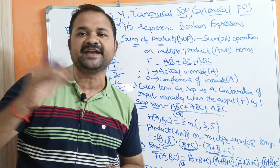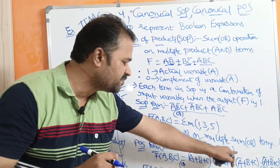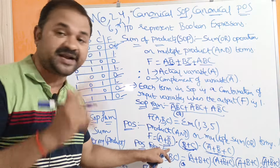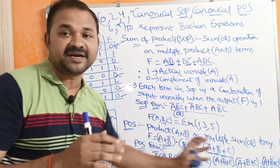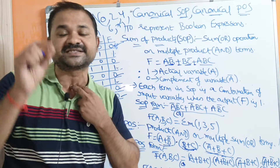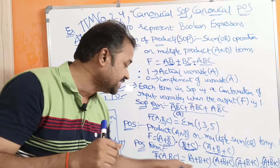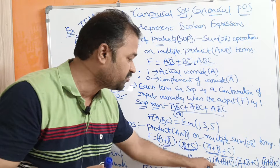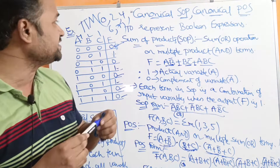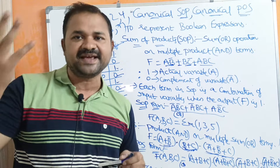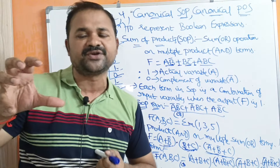Canonical POS, or Standard POS, means each sum term should contain all the input variables. For example, (A+B̄)(B+C)(Ā+B̄+C) is not canonical POS since some terms are missing variables. In canonical POS, every term must contain all input variables. These concepts — SOP, POS, Canonical SOP, and Canonical POS — are mainly used to represent Boolean expressions.